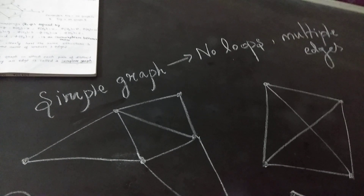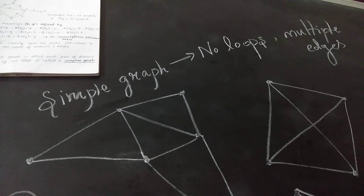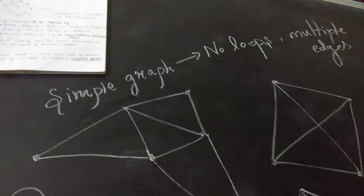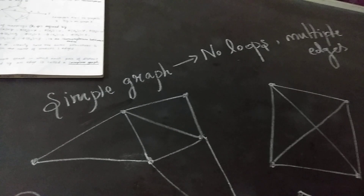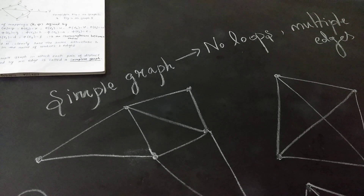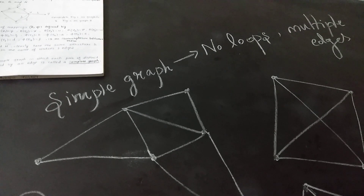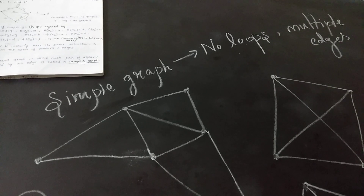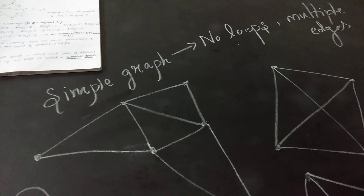If anyone asks you what is called a simple graph, the answer is: a graph that contains no loops and no multiple edges is called a simple graph. That should be your answer.